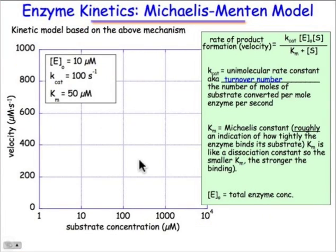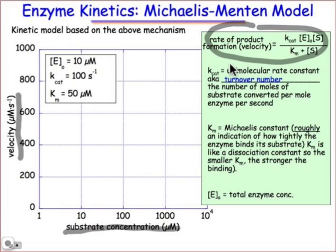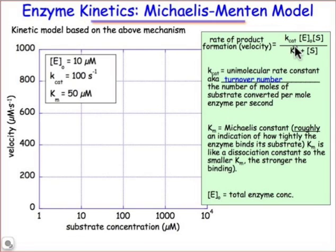We're going to use that model to develop what's known as the Michaelis-Menten expression of rate. Basically, we're looking at how fast the reaction proceeds — the velocity expressed in micromoles per second — relative to the substrate concentration. The Michaelis-Menten expression is shown here: velocity equals kcat times enzyme concentration times substrate concentration in the numerator, divided by Km plus substrate concentration in the denominator. Km is the Michaelis constant — you can think of it almost as a dissociation equilibrium constant, so the smaller the number, the more tightly the enzyme binds the substrate.